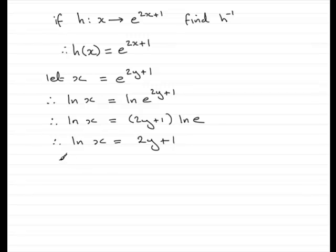Subtract 1 from both sides and we have the natural log of x minus 1 equals 2y. And then divide both sides by 2 to give you y equals the natural log of x minus 1 all divided by 2.